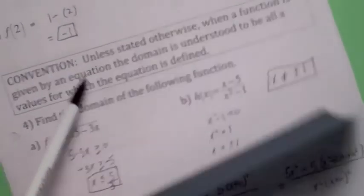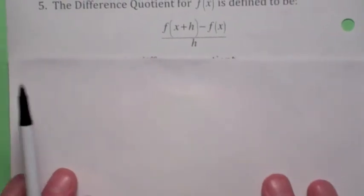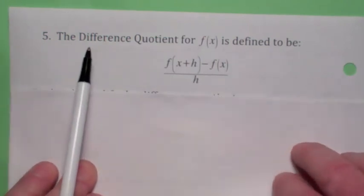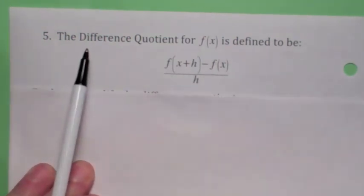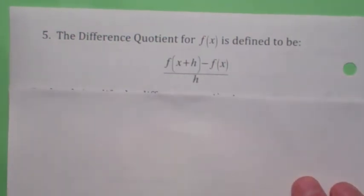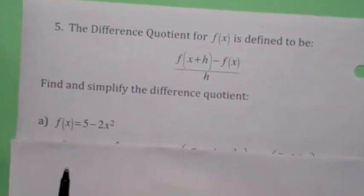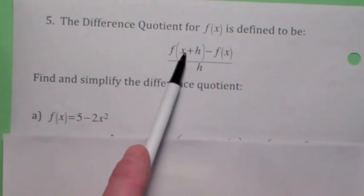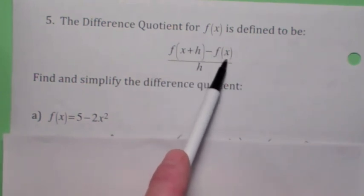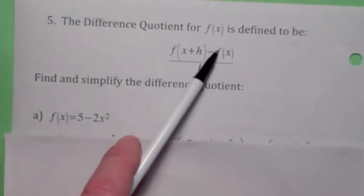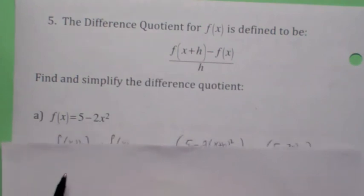All right, last thing I want to talk about. We'll talk a lot about this difference quotient. Basically, in section 2.2, we'll talk more about what it means geometrically, but for now, let's just talk about how to compute it. To compute this, you have to find f of x plus h and put it here, find f of x and put it here, and subtract f of x plus h minus f of x and divide by h. If you do it right, a lot of stuff should cancel on the top and the h should also cancel.